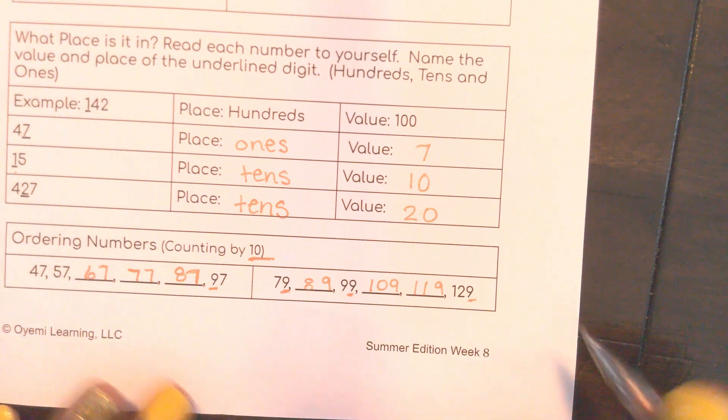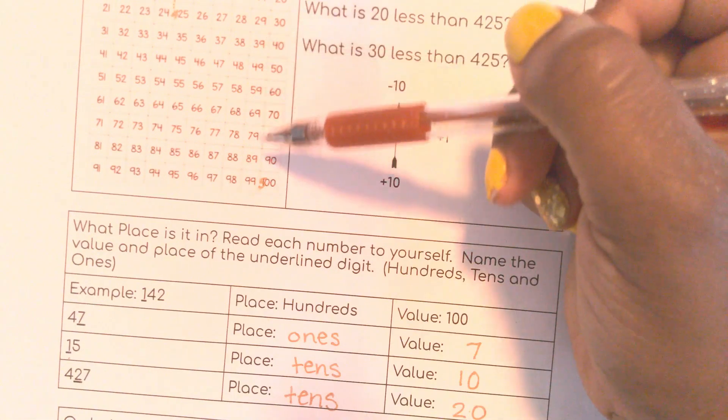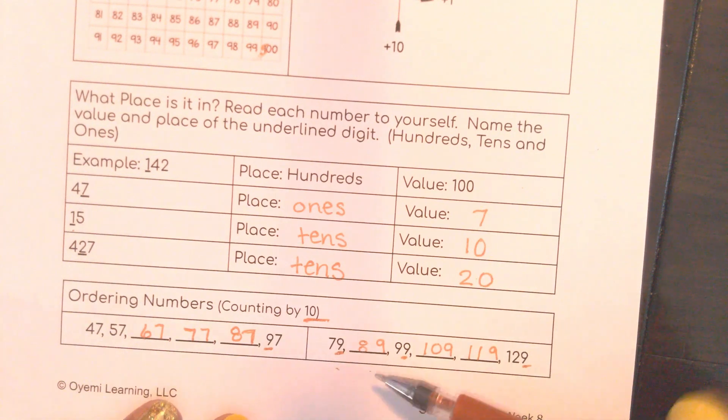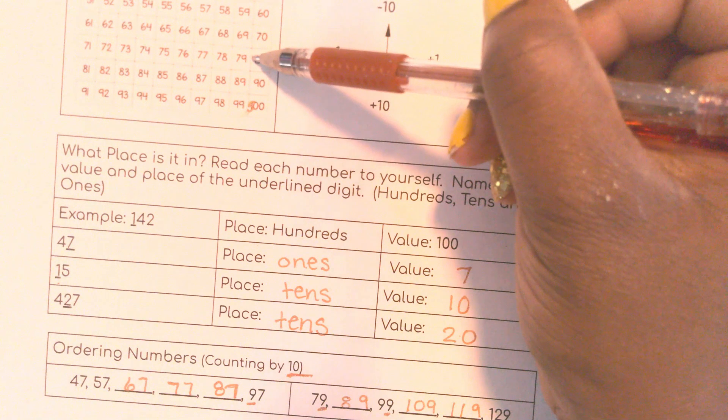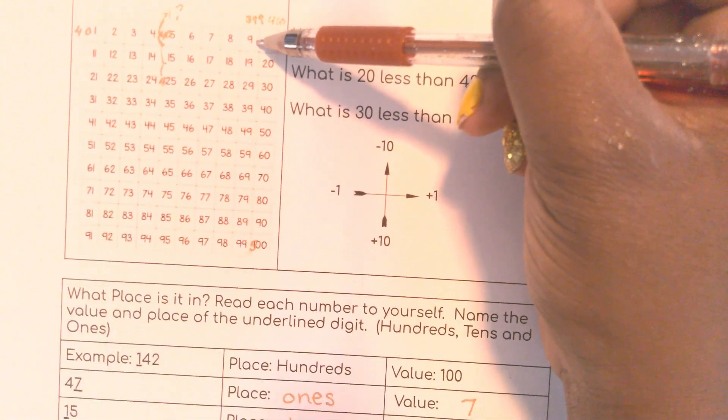If you need to go to the 100s chart to see the pattern, you can see the pattern. 79, 89. That's right here on my chart. 99. And remember, it just starts back over at the top with the new 100.